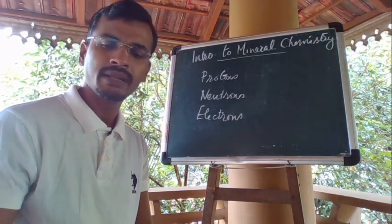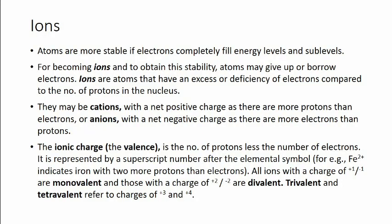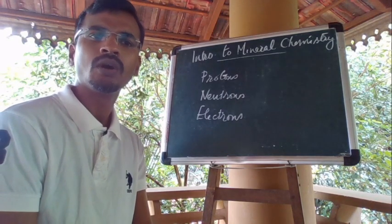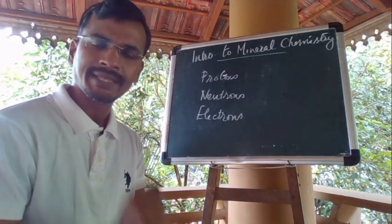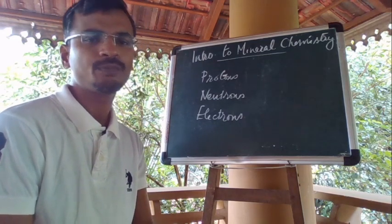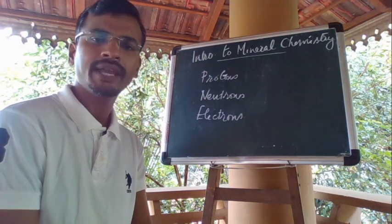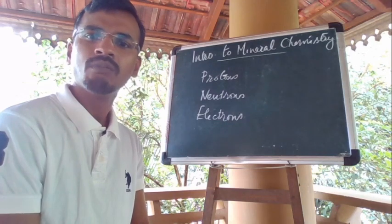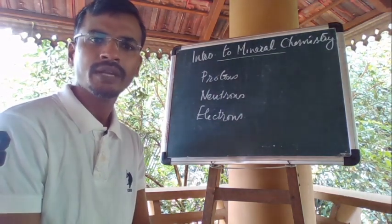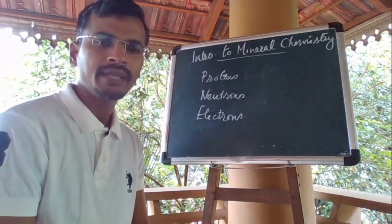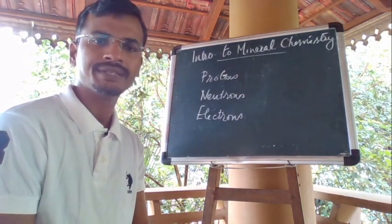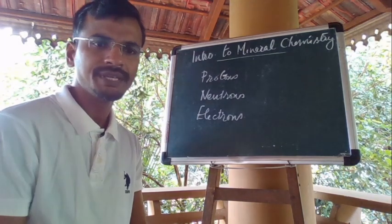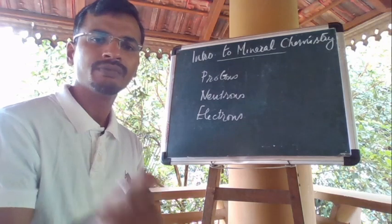Elements with valence electrons in similarly shaped orbitals are chemically similar, so they have similar chemical and physical properties. Atoms are more stable if electrons completely fill the energy levels and sub-levels. To obtain stability, atoms may give up or borrow electrons. Ions are atoms that have an excess or deficiency of electrons compared to the number of protons. Cations have a net positive charge; anions have a net negative charge.